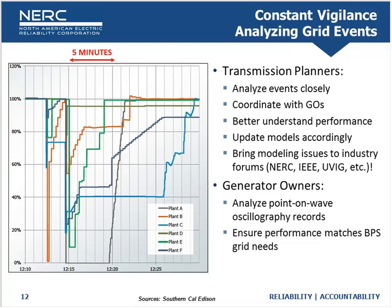From a generator standpoint, we're strongly advocating point-on-wave oscillography records either within the plant or at the point of interconnection, because we need to know what's going on at each individual inverter and how the overall plant is behaving. We need very high-resolution data. Some things like momentary cessation are happening in the couple-cycle range, so even PMU data can wash out some of the momentary cessation issues we want to see for large disturbance verification. Point-on-wave oscillography data is really what we're advocating.